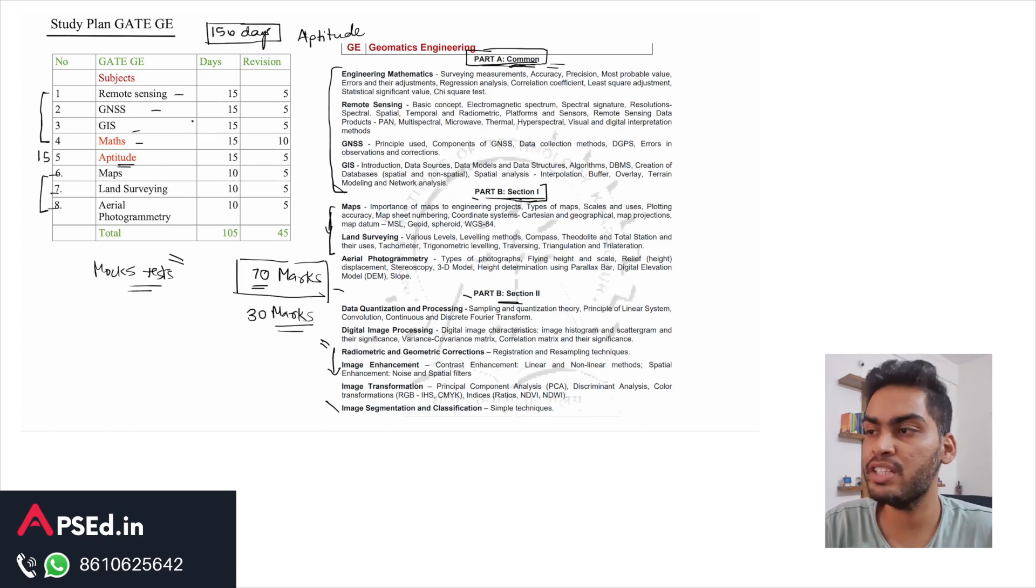Here you can see the distribution is fairly simple. You can give about 15 days to each of these first four topics. If you think you will need more days for maths, then you can decrease a few days from the first few topics and increase in maths. Then you have a few days available for revision also.